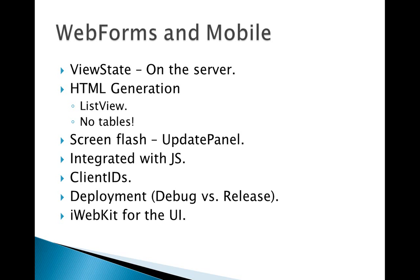The next issue was I had a lot of data going across the wire, so I did a bunch of optimization work. One of the biggest things I found was you need to be careful about what you're deploying — you need to make sure that everything is set to release. And then the last thing I looked at was how can I get an iPhone-type user interface over the mobile web. I looked at several options and finally ended up using iWebKit. This example doesn't have jQuery Mobile or those kinds of JavaScript libraries — I just used iWebKit and that seemed to work pretty well.